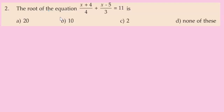Question number 2: the root of the equation (x plus 4) by 4 plus (x minus 5) by 3 is equal to 11. Options are: 20, 10, 2, none of these.